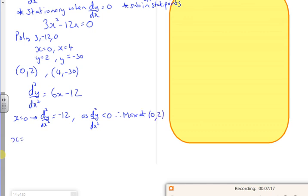When x is 4, d²y/dx². So, if I sub in 4, I've got 6 times 4 is 24. Minus 12 is plus 12. It's not always plus or minus. Quite a lot of the examples do a plus or minus the same number. So, it's to do with the symmetry. d²y/dx² is greater than 0. Therefore, min at 4, -30. And that's how you find or determine whether it's max or min.